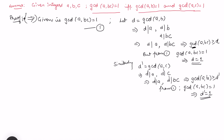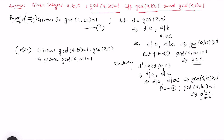Now let's do the proof of the converse. What is given now is that gcd(a, b) = 1 and gcd(a, c) = 1, and we want to prove that gcd(a, bc) = 1. To prove this, let's take gcd(a, bc) as some quantity d. This means d divides a and d divides bc, and d is a common divisor.